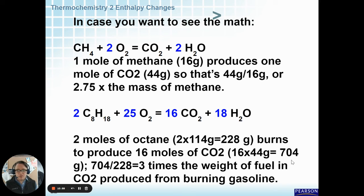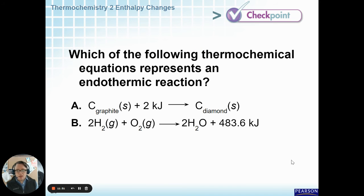In octane, you end up having a molar ratio of 16 to 2. And so, you get 16 moles of CO2 per 2 moles of octane. That is straight up three times the weight of CO2 produced per weight of fuel. So, it's a little bit less with methane.